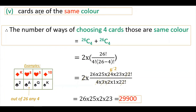The last question: all 4 cards are of the same color. Whenever 'same' appears, we add. Same color means either all red or all black — total 26 red cards and 26 black cards. Out of 26 you choose 4 for each color, then add both. So the answer is 2 into 26C4, which equals 2 into 26 factorial divided by 4 factorial into 22 factorial, giving 29,900.